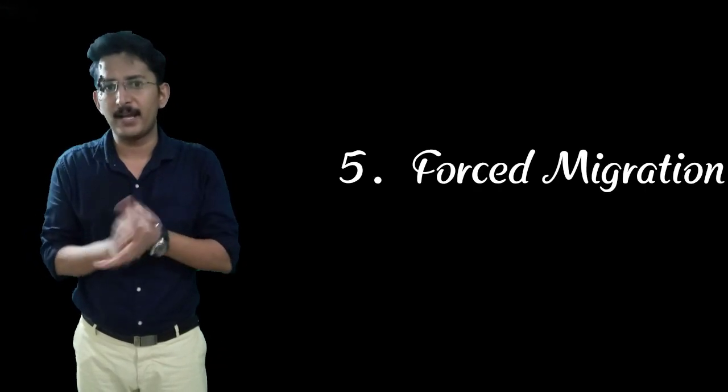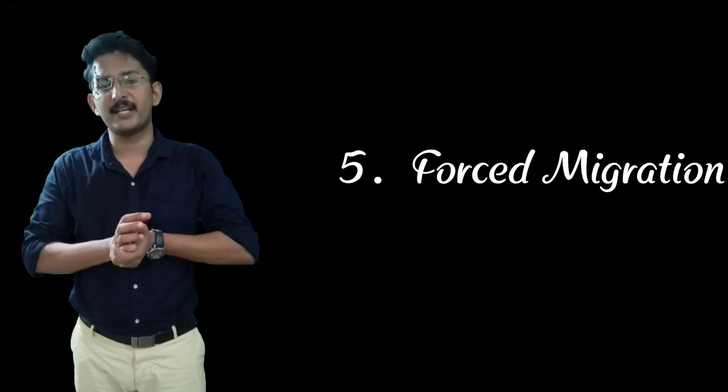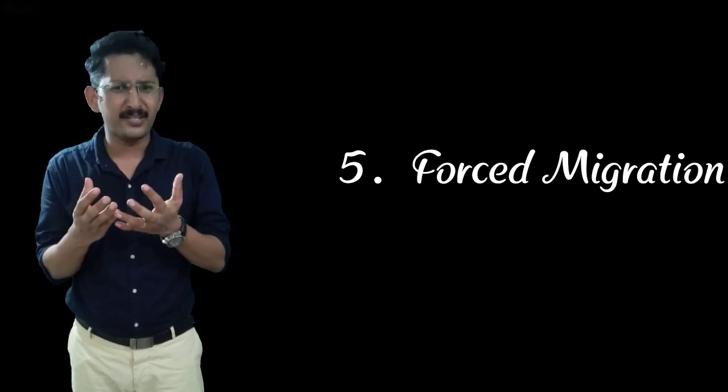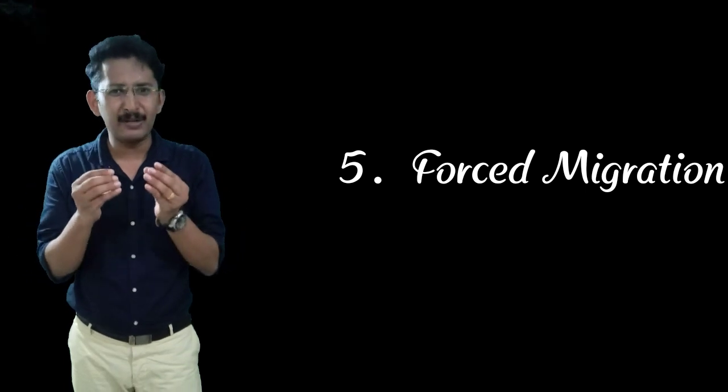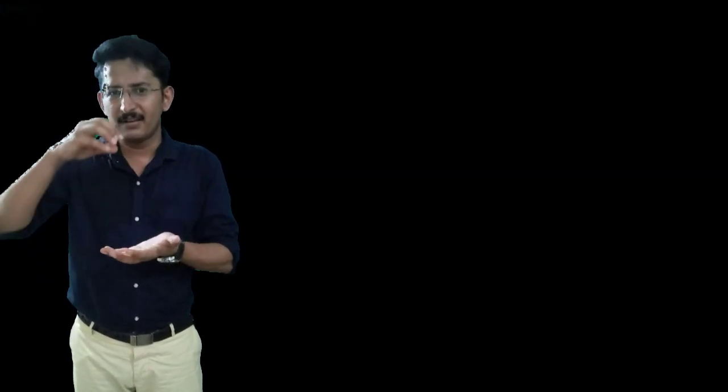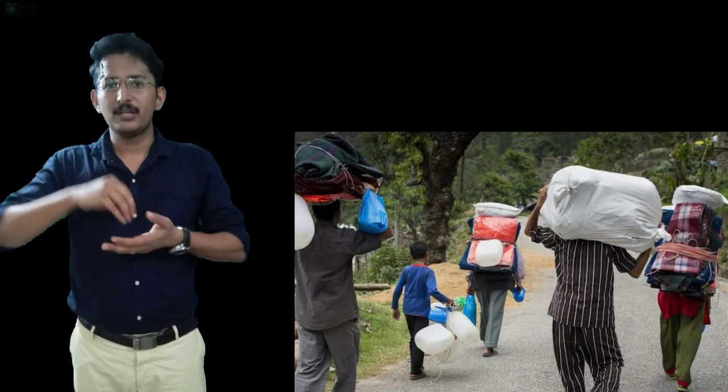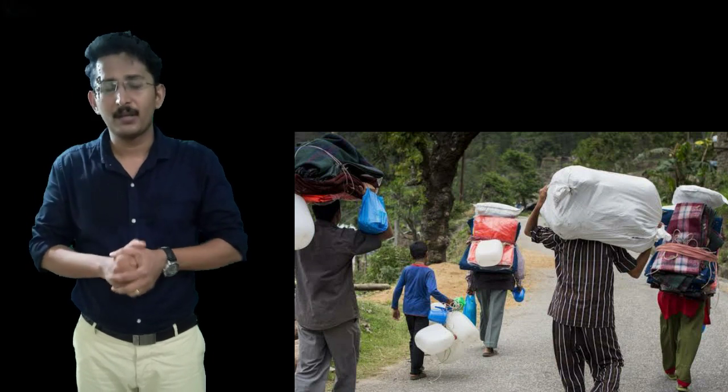The fifth type is forced migration. People do not like to move from where they are living, from their hometown, but they are forced to move out of that region. There can be many reasons — maybe a civil war, maybe some government policies. For these kinds of matters, people are not allowed to live there, so they are forced to move out of that region. That is called forced migration.